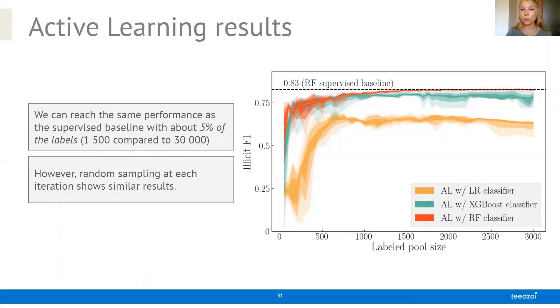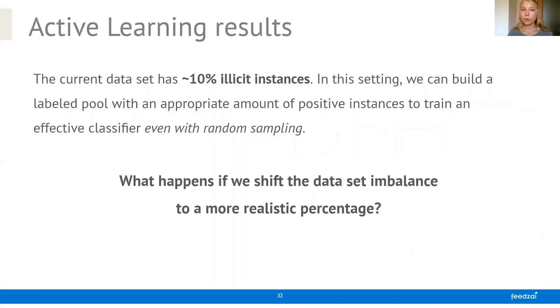And we were wondering now why this is the case. Our hypothesis is that because we have this 10% illicit rate, which is pretty high in a money laundering setting, we can build a labeled pool with an appropriate amount of positive instances, even if we use random sampling at each iteration. However, because again, we are looking at a practical setting, we were wondering what happens if we set the data set imbalance to a much more realistic percentage.